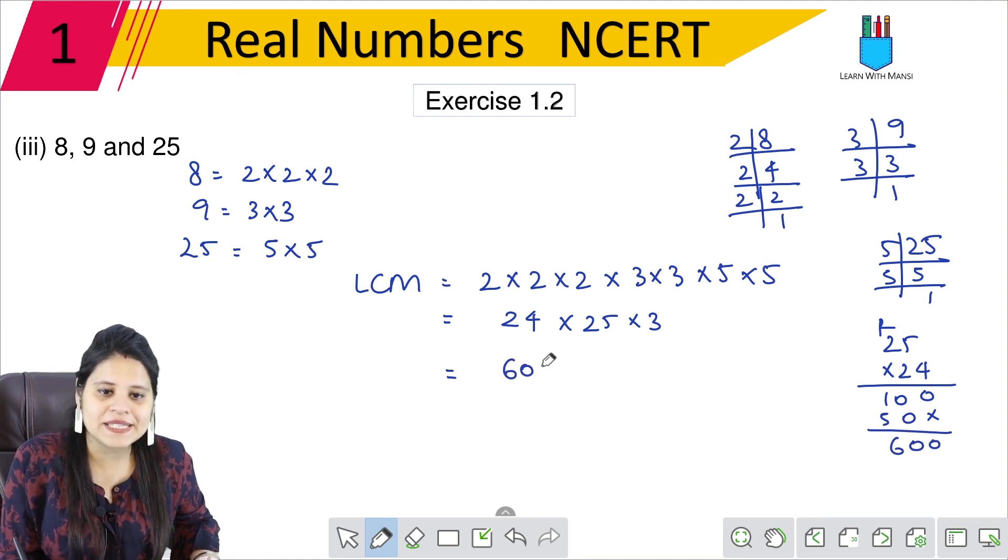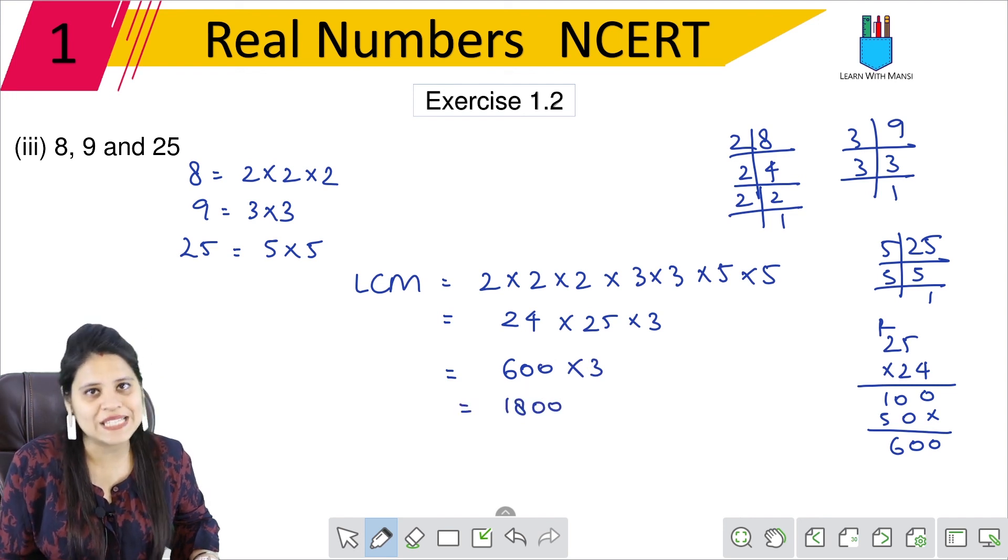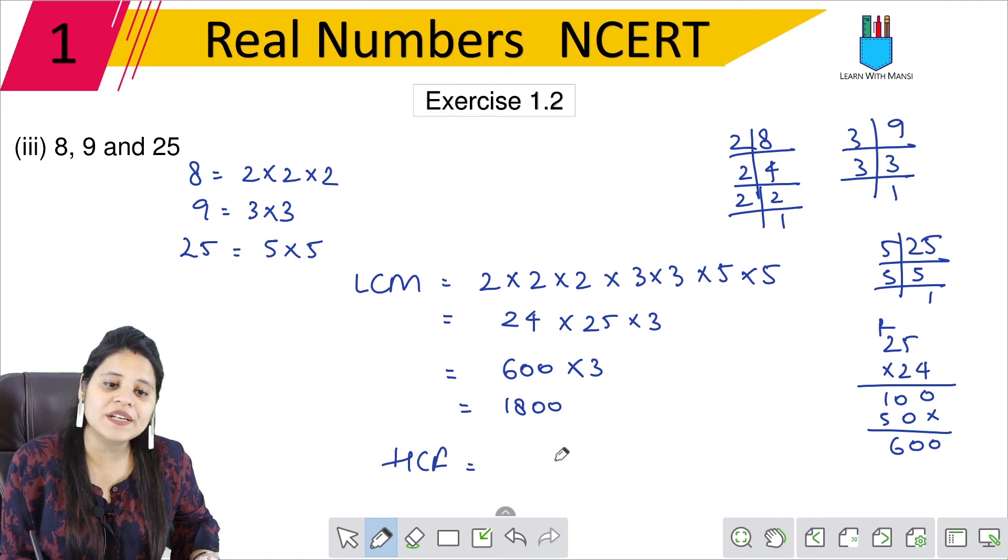600. Now we have to do 600 × 3. Simply, 6 × 3 is 18. So 1800. And the highest common factor is 1.